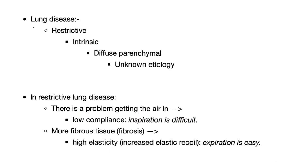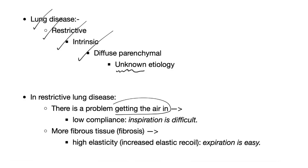Idiopathic pulmonary fibrosis is a lung disease. Is it obstructive or restrictive? It is restrictive. Is it extrinsic or intrinsic? It's intrinsic. Is it alveolar or diffuse parenchymal? It's diffuse parenchymal. Does it have a known or unknown etiology? It's called idiopathic — unknown etiology. If you have lots of fibrosis, you have a problem getting the air in, but you are good at getting the air out.